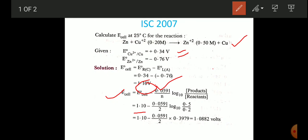From Zn to Zn²⁺ there is loss of two electrons, and from Cu²⁺ to Cu there is gain of two electrons, so n = 2. In the product we have zinc ion with concentration 0.50 M, and in the reactant 0.2 M.